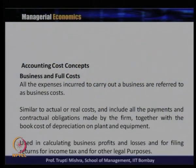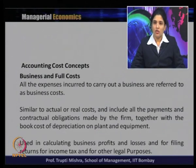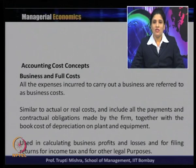The second category is business cost and full cost. All the expenses incurred to carry out the business are referred to as business cost. This is similar to the actual cost or real cost and includes all the payments and contractual obligations made by the firm together with the book cost of depreciation on plant and equipment. Business cost includes actual cost, the obligations made by the firm, and the book cost that includes the depreciation of plants and machinery calculated based on the lifetime of the plant and machinery.